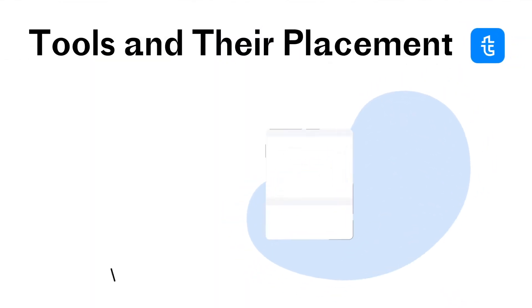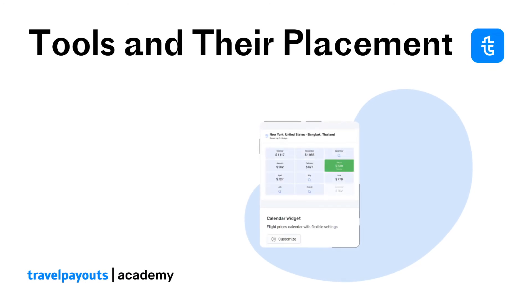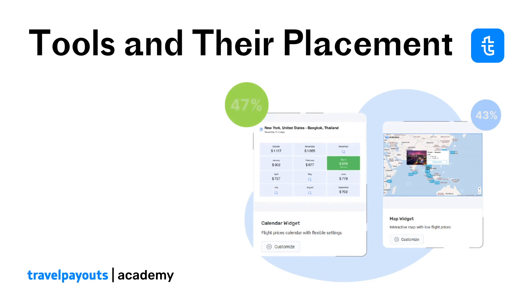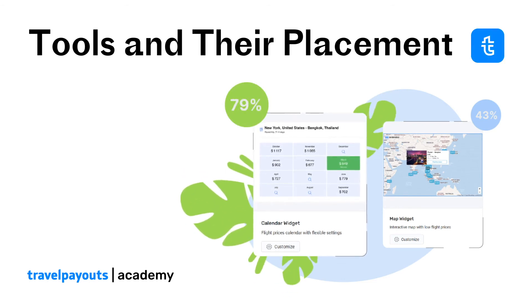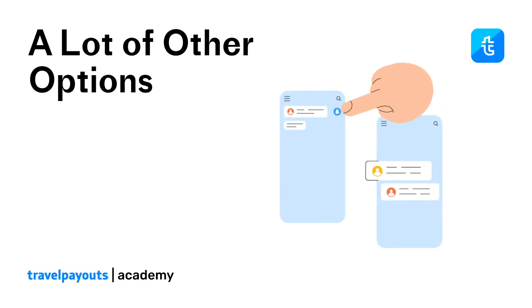A-B testing your affiliate tools and their placement can provide you with a lot of insights. For example, you can try out two different widgets by the same brand and see which one will drive more engagement and clicks. There are tons of other things you might want to test, so keep an open mind.